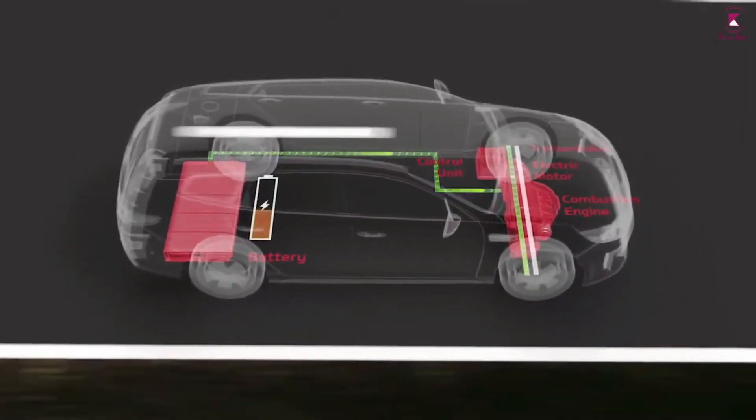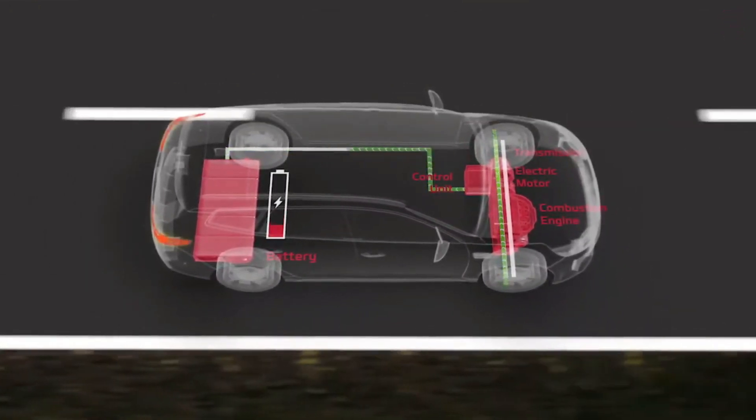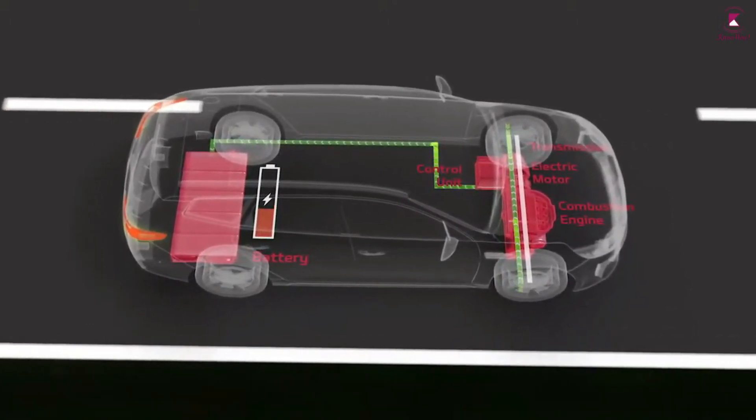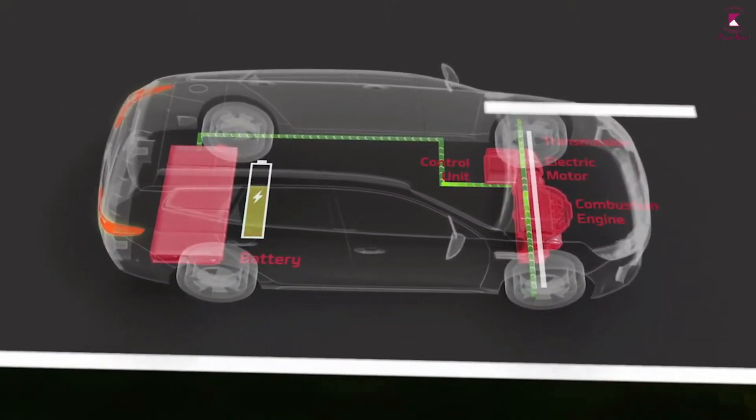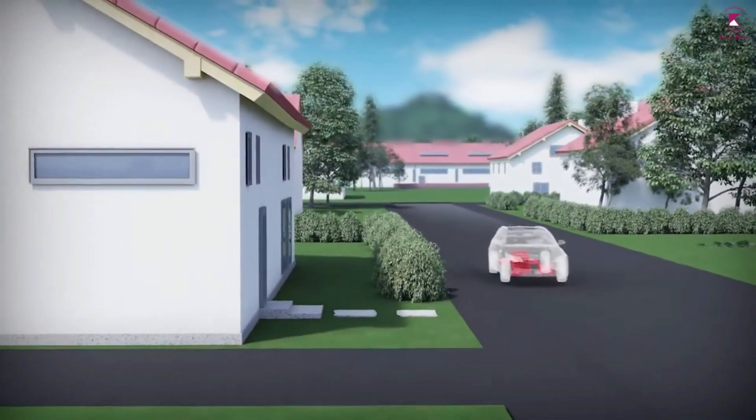Moreover, after all the electric power is used up, the car reverts to a conventional parallel hybrid. You don't need to worry about topping the batteries up if you need to go further, because the conventional engine automatically kicks in and takes over when the batteries are depleted.